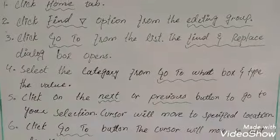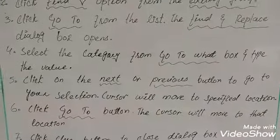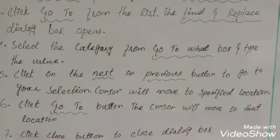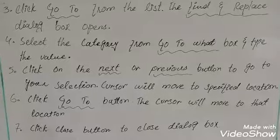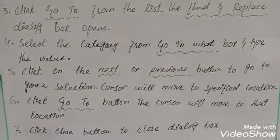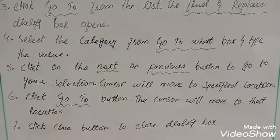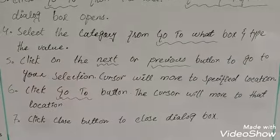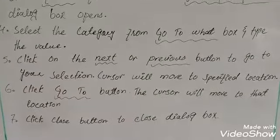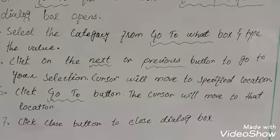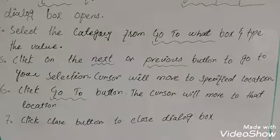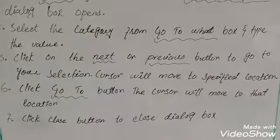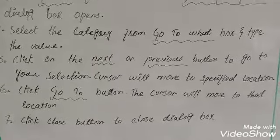Step five: click the Next or Previous button to go to your selection — the cursor will move to the specified location. Step six: click the Go To button — the cursor will move to that location. Step seven: click the Close button to close the dialog box.